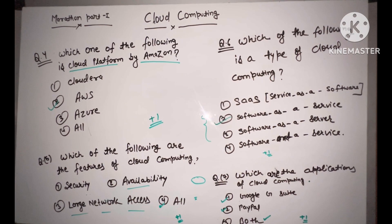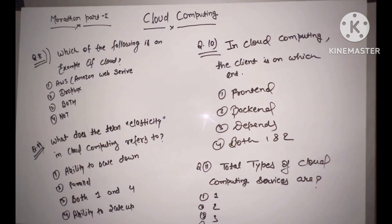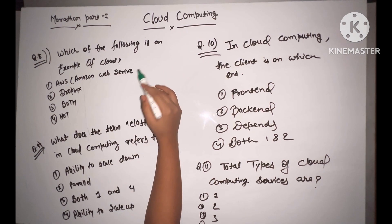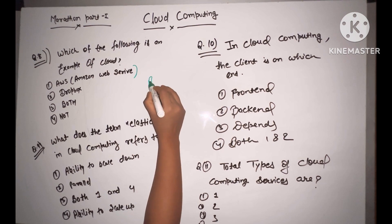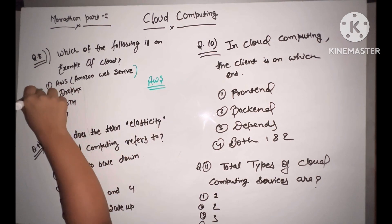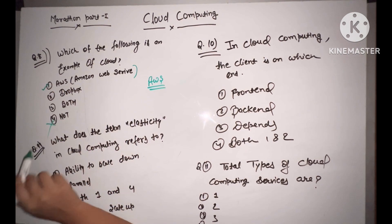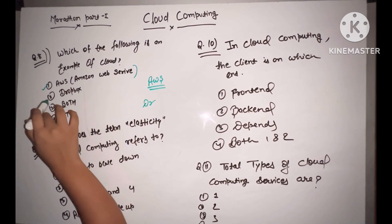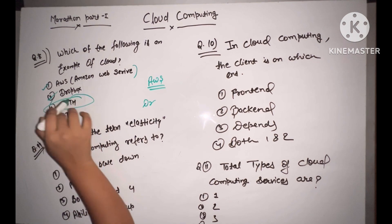Question number 8: which of the following is an example of cloud — AWS, Dropbox, both, or none? We already know Amazon AWS is Amazon Web Services. Dropbox is also an example of cloud. So the answer is both. Plus one.